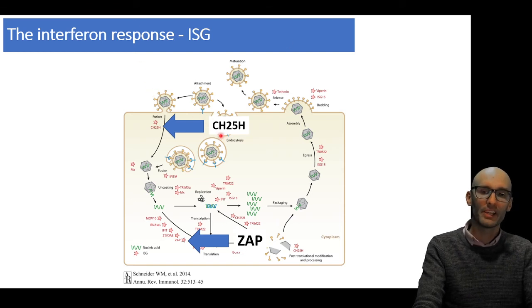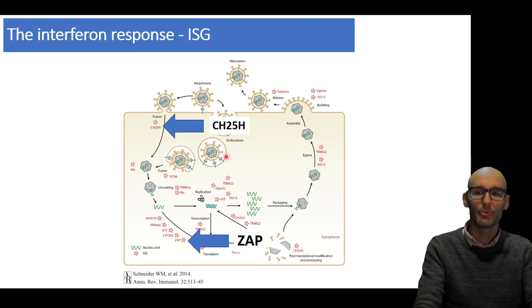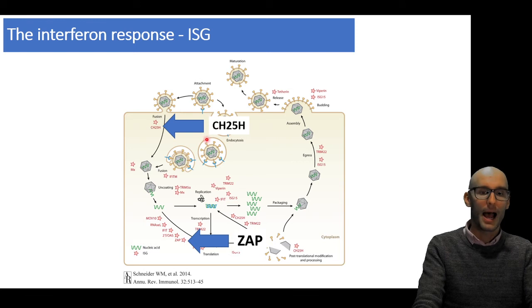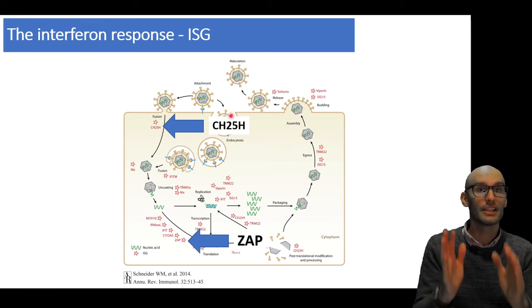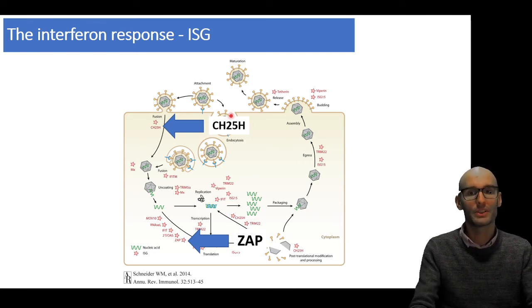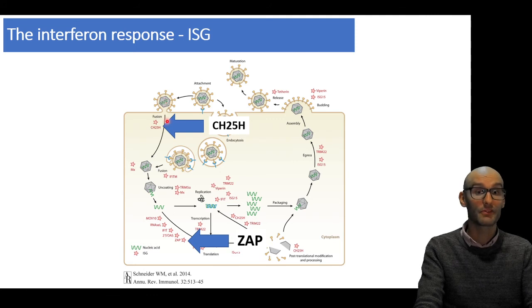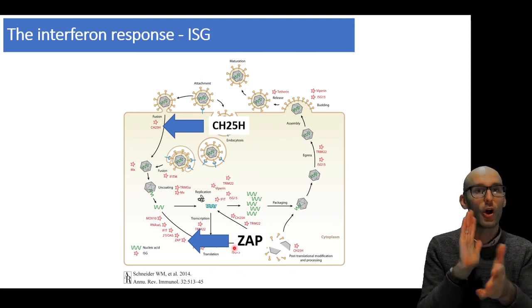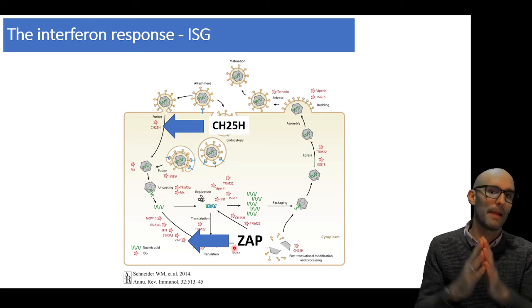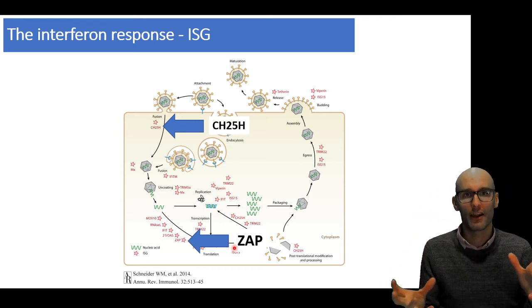And in a previous video, we just looked at two examples here. This one which changed the cholesterol makeup of the cell membrane, which helped prevent viruses from fusing with the membrane,